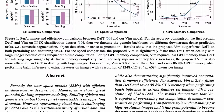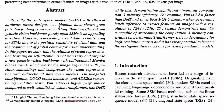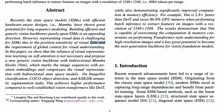Mamba has been doing really well for long sequence modeling of text. Building efficient generic vision backbones purely upon SSMs is an appealing direction. But the problem is that representing visual data is a challenge for SSMs due to the position sensitivity of visual data. Unlike text, which is a sequence, vision has more complications and requires a global context for visual understanding.